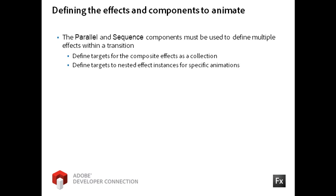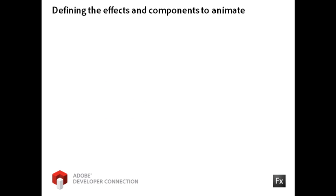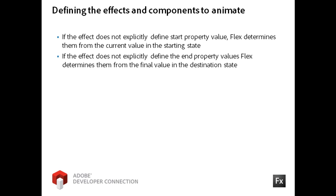If you define the Targets for a composite effect, you can still further refine the movement of each component by also defining Target or Targets property for the nested effect. You can see that the Parallel composite effect targets multiple components, but that each component is also modified by its own specific effect. Note that the Fade effect does not have a Target property defined and will therefore target all the components listed in the Parallel effect. Some effects have starting or ending values and some do not. If an effect does not explicitly define a start or ending value, Flex will do its best to determine them based on the property's values in either the starting or ending state.